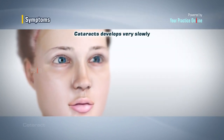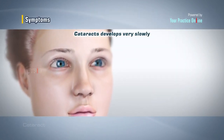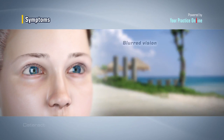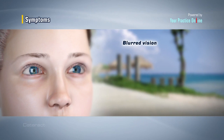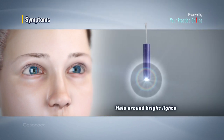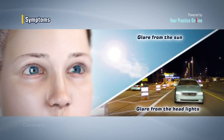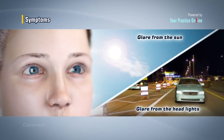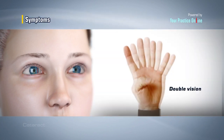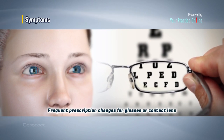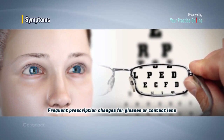Cataracts usually develop very slowly and are not associated with any pain or redness of the eye. Your vision gradually becomes blurred as if you are looking through the dirty lens of a camera. Some patients may see a halo around bright lights, while others find the glare from the sun and headlights of approaching cars at night annoying. Some patients present with double vision in one eye and colors appear dull or muted. In others, frequent prescription changes for glasses or contact lenses may become necessary.